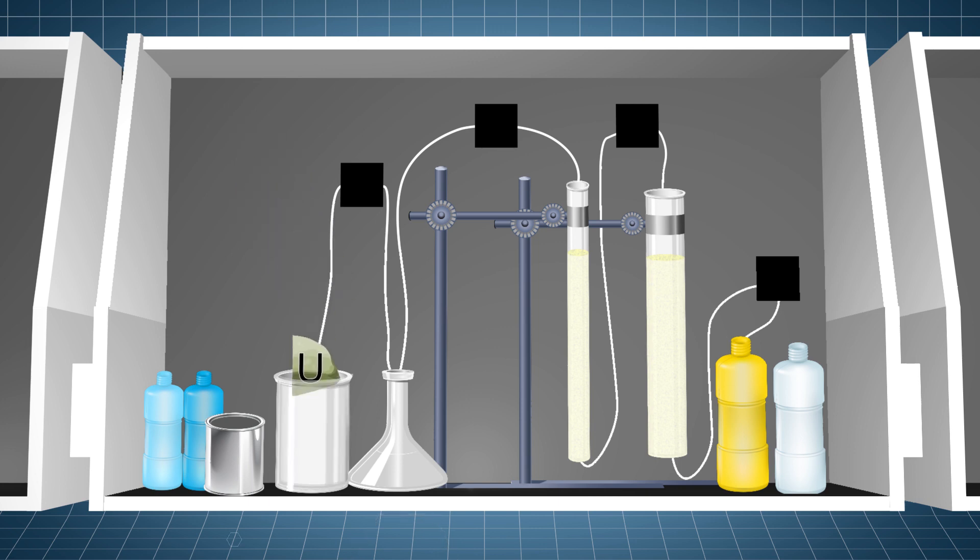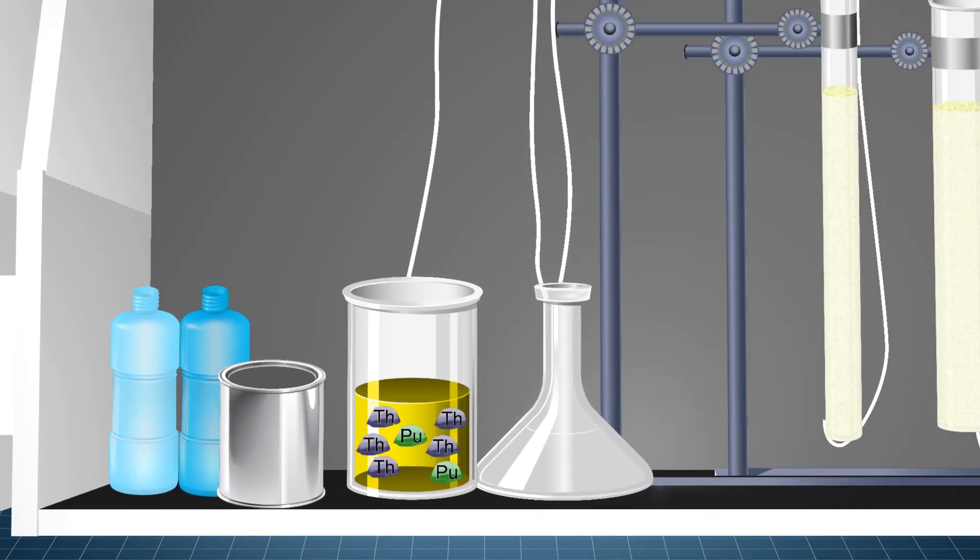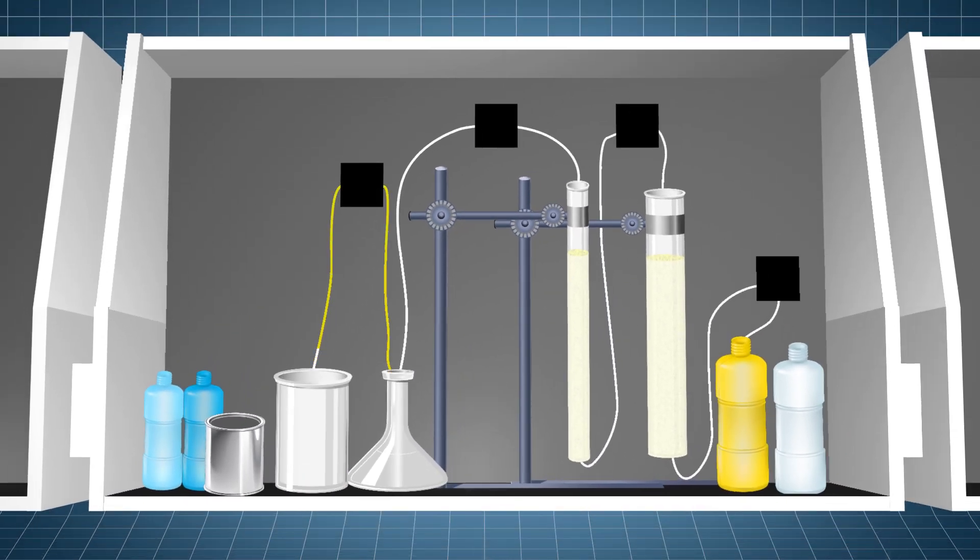There, uranium is poured into the dissolution beaker and mixed with nitric acid. This creates uranyl nitrate with bits of thorium and plutonium inside. After everything mixes, the solution is then pumped into a feed flask.